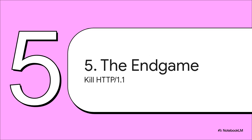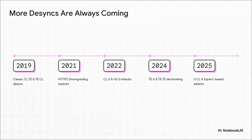When you put all of this together — 0.CL deadlocks, the Expect header chaos — it all points to one unavoidable conclusion: we can't keep patching HTTP/1.1. It's a losing battle. The protocol itself is the vulnerability. Just look at the timeline — every single year without fail, a new critical request smuggling variant gets discovered. We had CLTE in 2019; now we're dealing with 0.CL and Expect-based attacks. The pattern is crystal clear: we can't patch our way out of this. More desyncs are always coming.